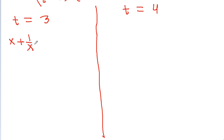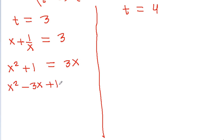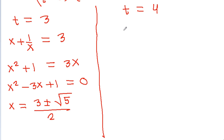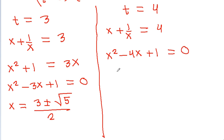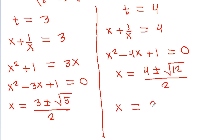When t = x + 1/x = 3: x² - 3x + 1 = 0, giving x = (3 ± √5) / 2. When t = x + 1/x = 4: x² - 4x + 1 = 0, so x = (4 ± √12) / 2 = 2 ± √3. By this method also we get the same four values of x.